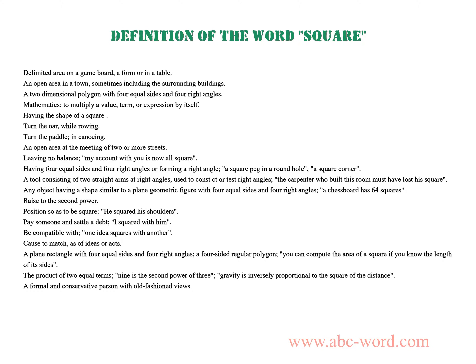Any object having a shape similar to a plain geometric figure with four equal sides and four right angles — a chess board has 64 squares. Raised to the second power. Positioned so as to be square — he squared his shoulders. Pay someone and settle a debt — I squared with him.